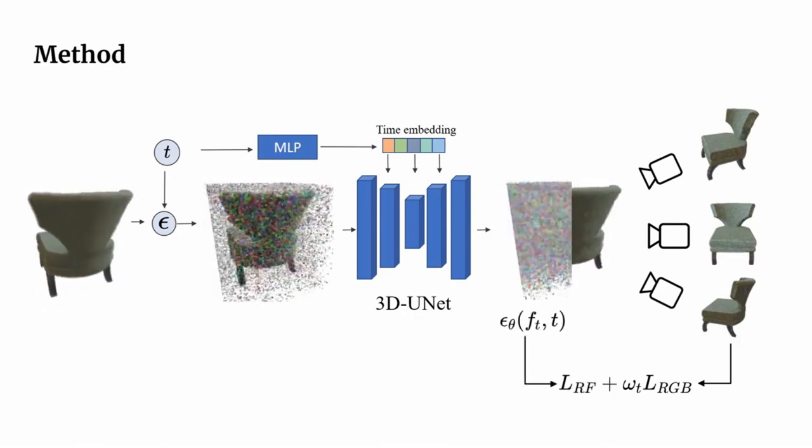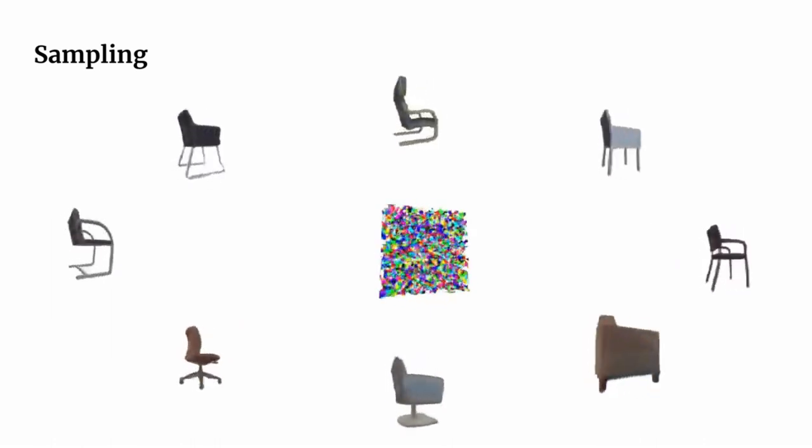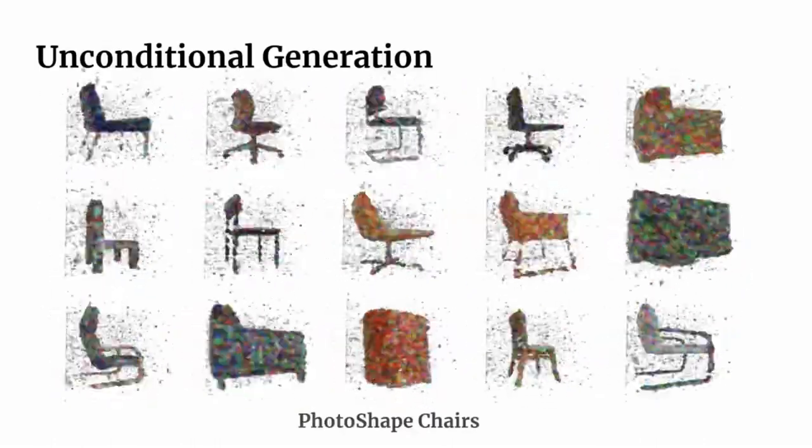This process biases the model towards generating radiance fields that can be rendered to high-quality images. At inference time, we apply ancestral sampling, where we gradually denoise from complete noise to samples from the underlying data distribution.